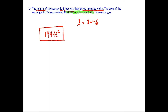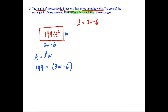To set this up: the width is W and the length in terms of W is 3W minus 6. The area of a rectangle is length times width, so 144 equals (3W minus 6) times W. Distributing gives us 144 equals 3W squared minus 6W. Then we subtract 144 from both sides.